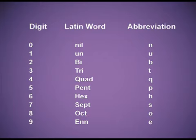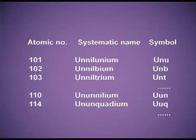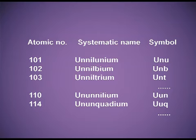Using these Latin word roots, we will write the IUPAC name for all elements with atomic number more than 100. For example, the element with atomic number 101: for 1 it is un, for 0 it is nil, and again for 1 it is un, with the name ending in 'ium'. So the systematic name is Unnilunium, and its symbol is Unu — the first U is capital and the other letters are in small.